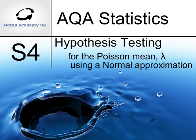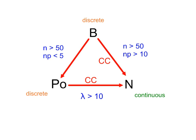Hypothesis testing for the Poisson mean using a normal approximation. To use a normal approximation to the Poisson distribution, lambda must be more than 10. For hypothesis testing, the continuity correction is not required.